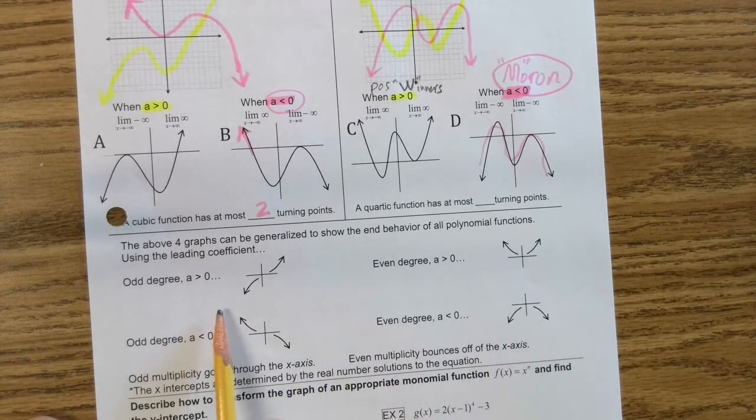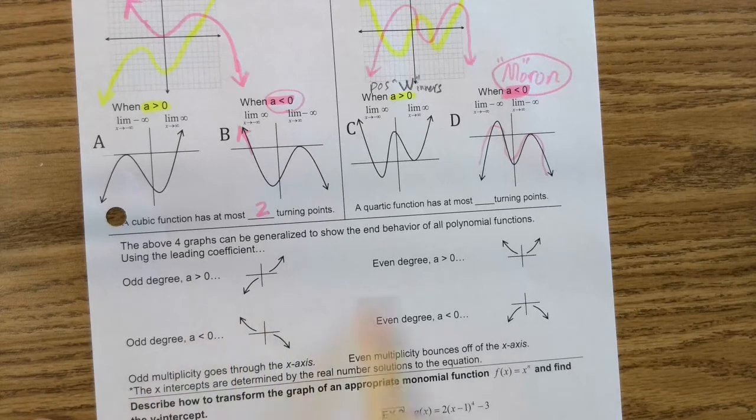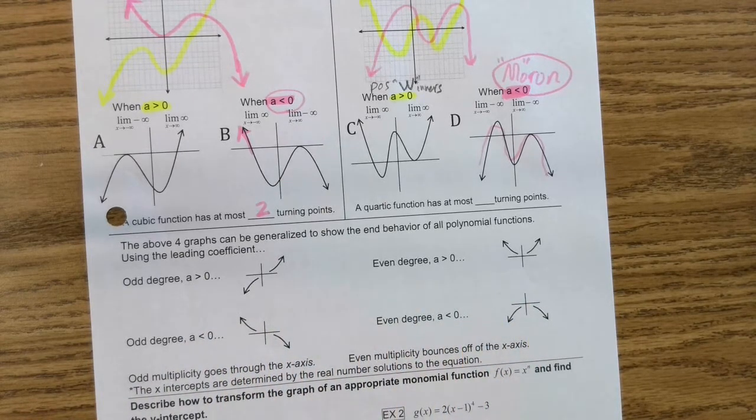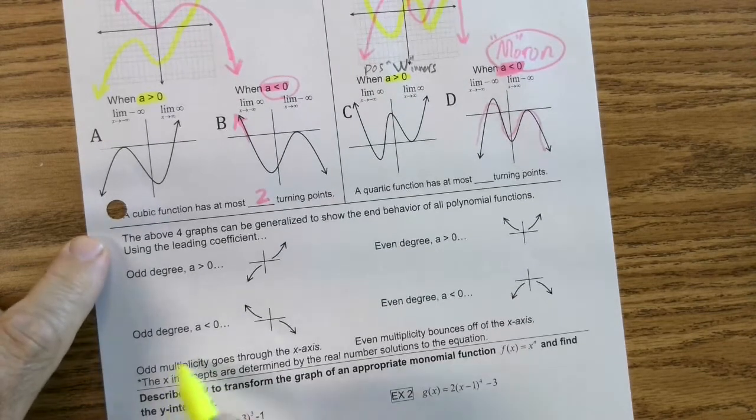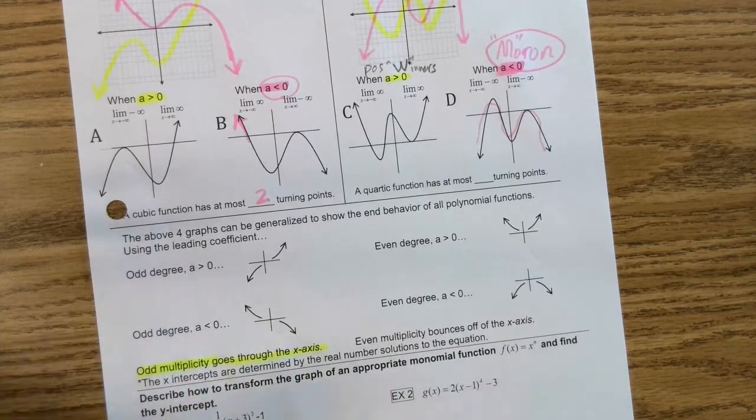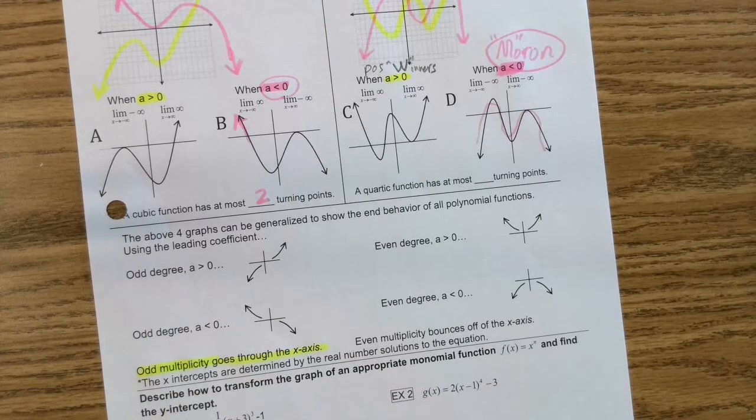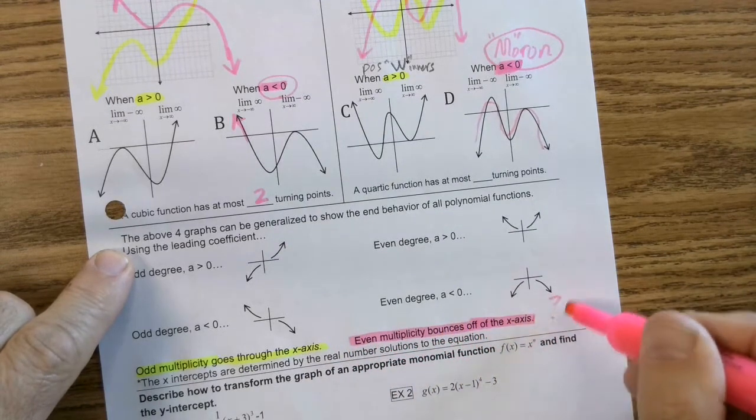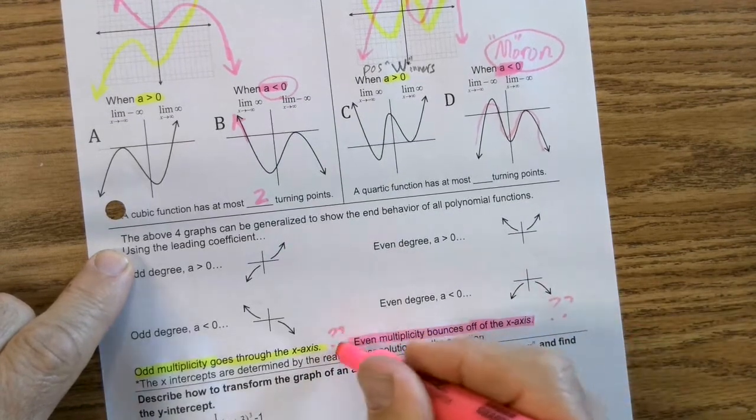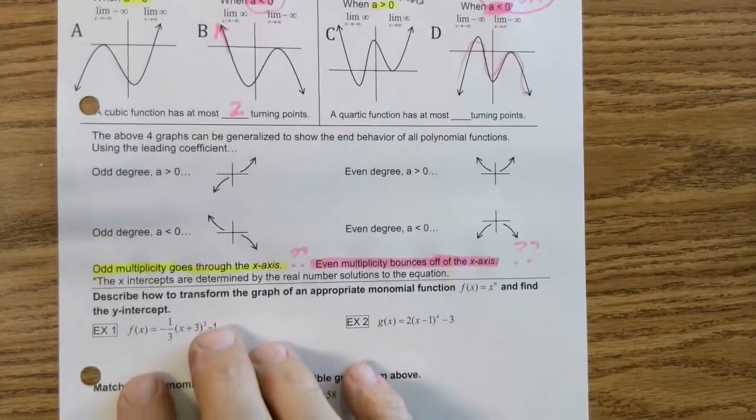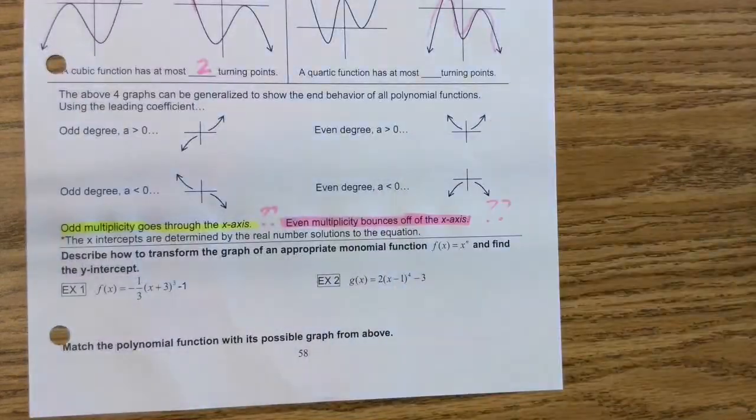So generally speaking, this is a generalization that I just explained to you. But here's the deal, you guys. I'm going to draw your attention to this. Odd multiplicity goes through the x-axis. That's huge. And then even multiplicity bounces off the x-axis. What in the world are these things even talking about? They will be significant on the back page. So I'm going to hit pause on that explanation. Let's dive into this.